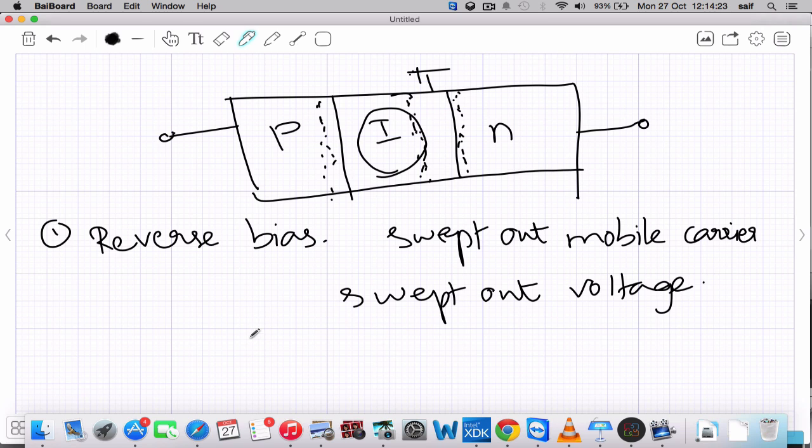Now coming with the zero bias, we know that the I region has very high resistivity when compared to P region and N region. Now what we will do is operate under forward bias.